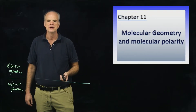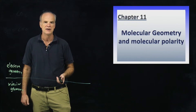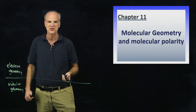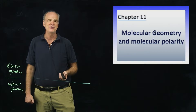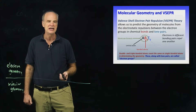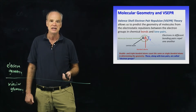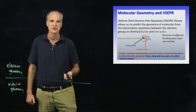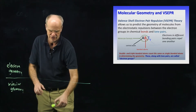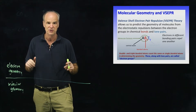Hey everybody, welcome back to chemistry. Now we're moving into a new chapter, chapter 11, and the chapter starts out with something called VSEPR theory. This is where you're able to take a Lewis structure of a molecule and then figure out the three-dimensional shape of that molecule.